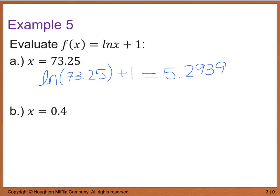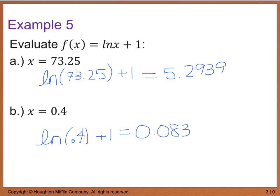For part b, we have the natural log of 0.4, close your parentheses, plus 1. When we do this, we end up with 0.0837.